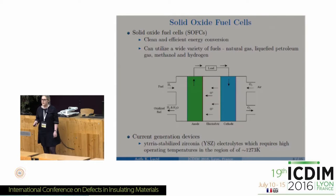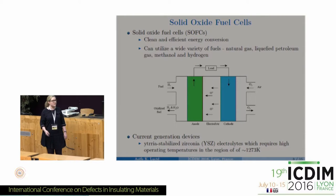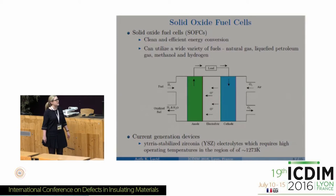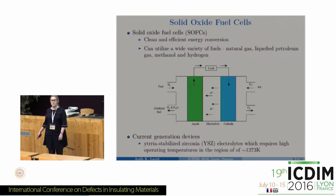Why solid oxide fuel cells? There is a call for clean energy and an approaching energy crisis. Solid oxide fuel cells have been investigated for a very long time as a possible source of clean and efficient energy conversion. They can be up to 80% efficient when using combined heat and power systems, compared to a standard heat engine with an efficiency of 25%. They are also very flexible and can utilise a wide variety of fuels, ideally hydrogen fuel.